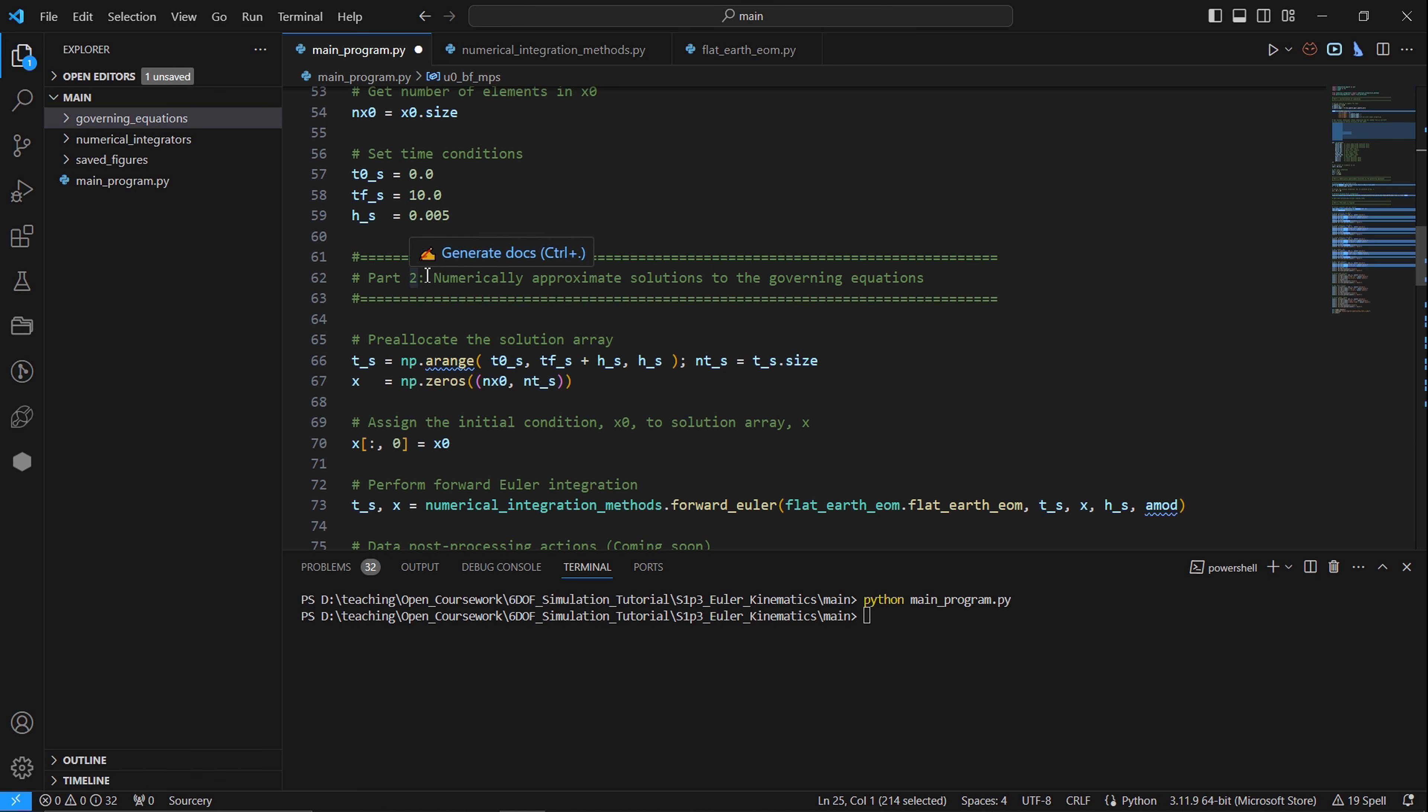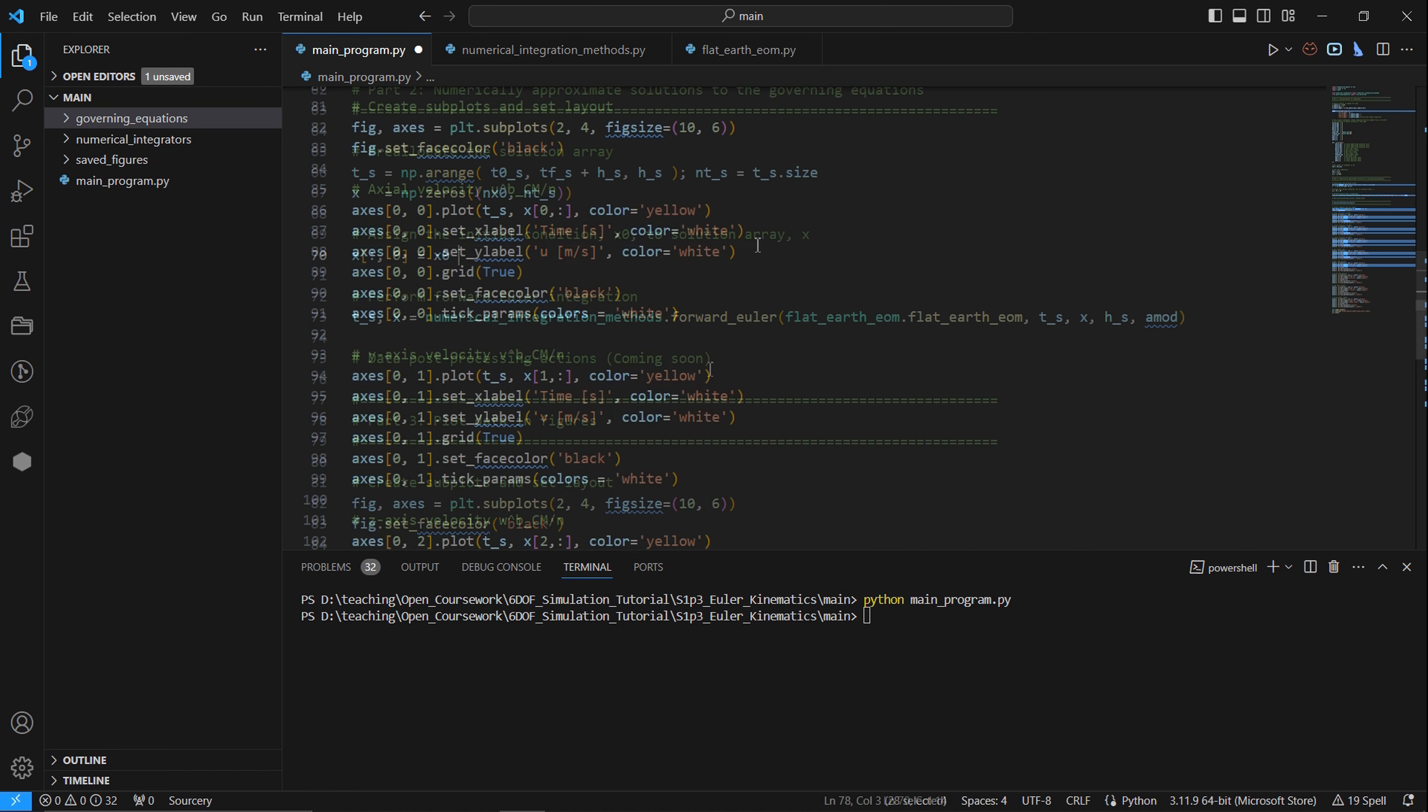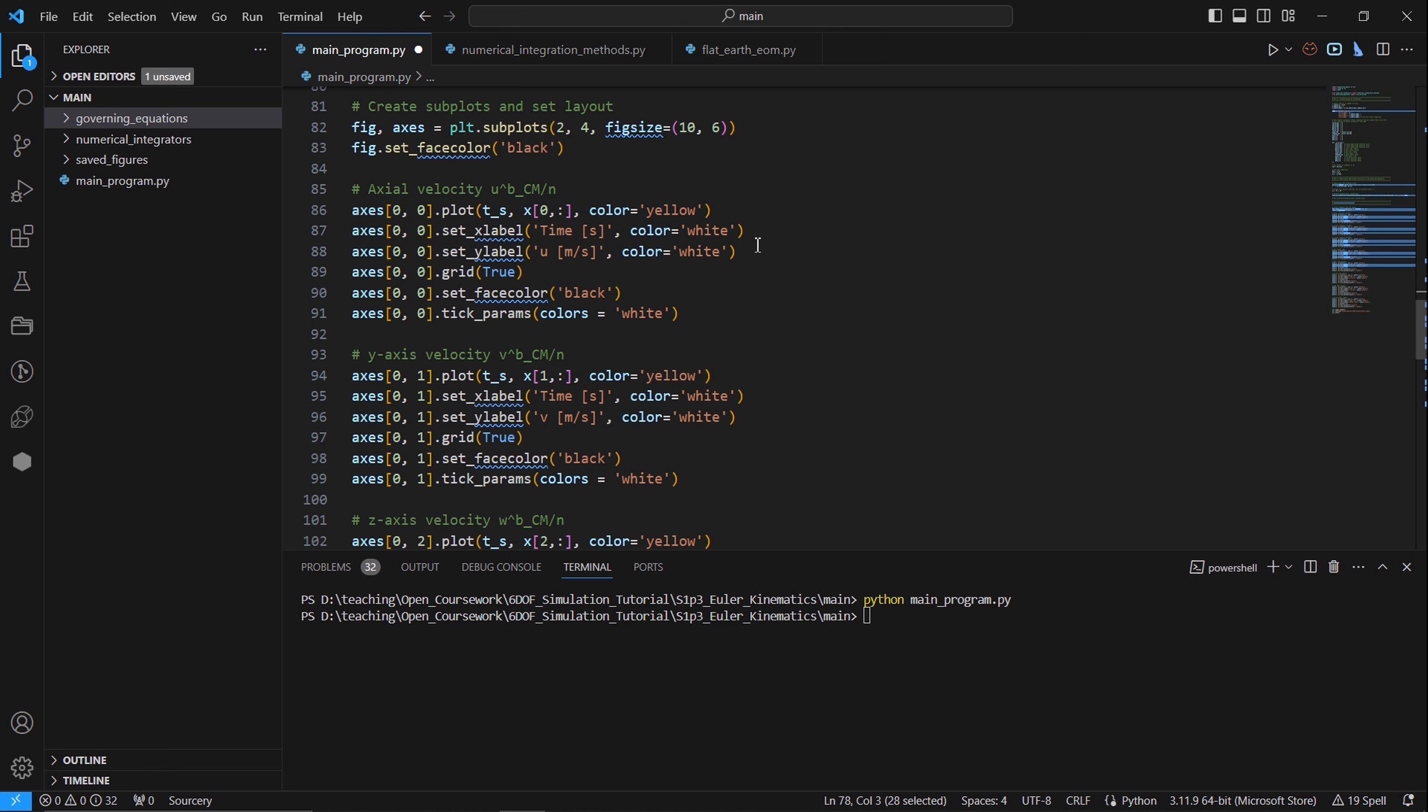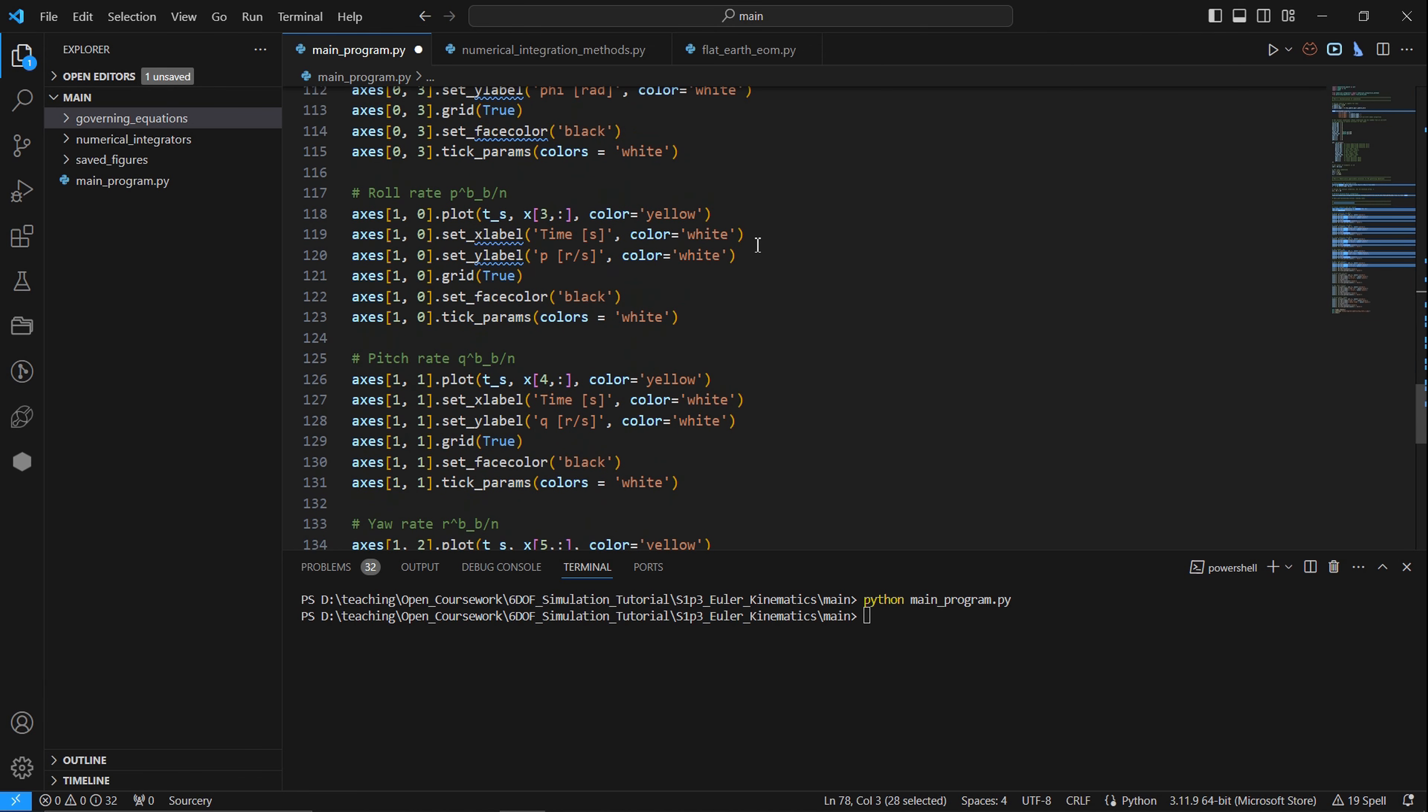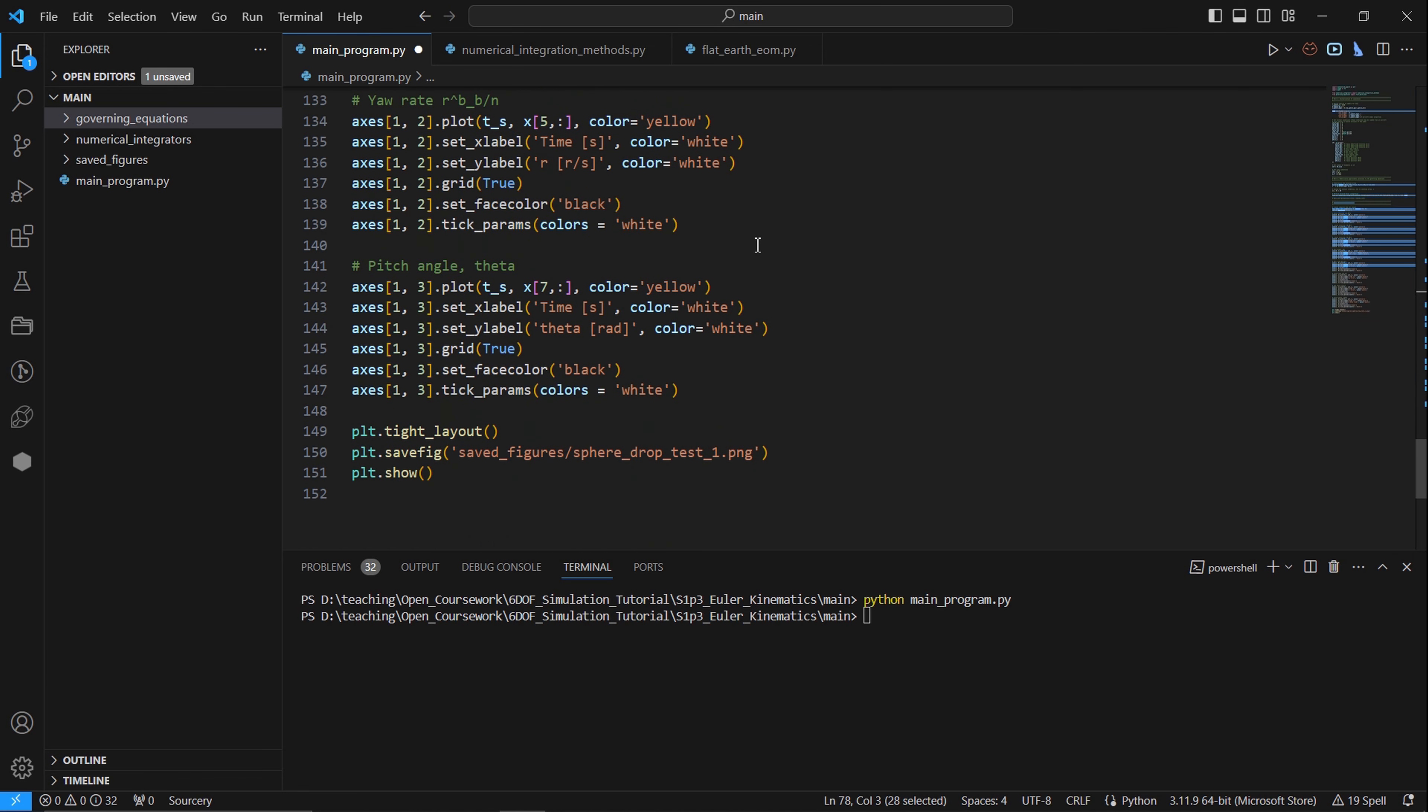Going on, we set our initial time condition, and then the final time and the time step size. Part two, we numerically integrate the governing equations. So here we are making the time array. We pre-allocate the solution vector. We assign the initial condition to the solution vector. And then we numerically integrate forward in time with our forward Euler method. And each variable is plotted as an array of subplots. There's a total of eight, and we do not plot the yaw angle. That's what we leave out.